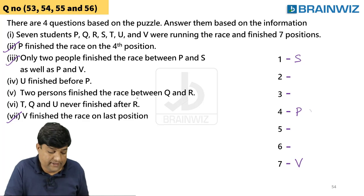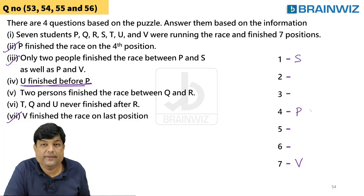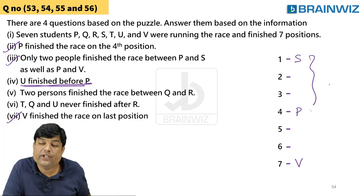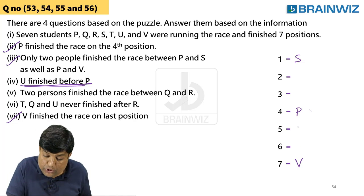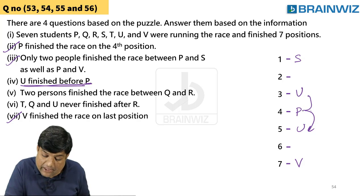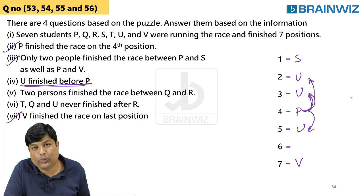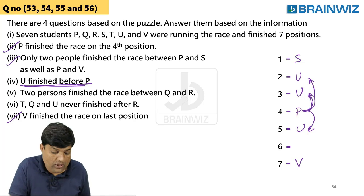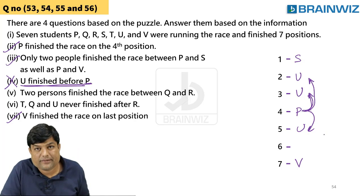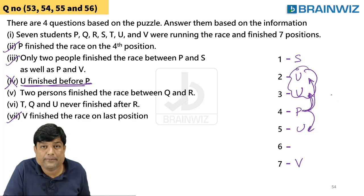U finished the race before P. In this running race, U is not after P — U is before P. But is it immediately before P, or might U be further ahead? He has not specified, so this point is leading to some confusion and I'm avoiding it for now.